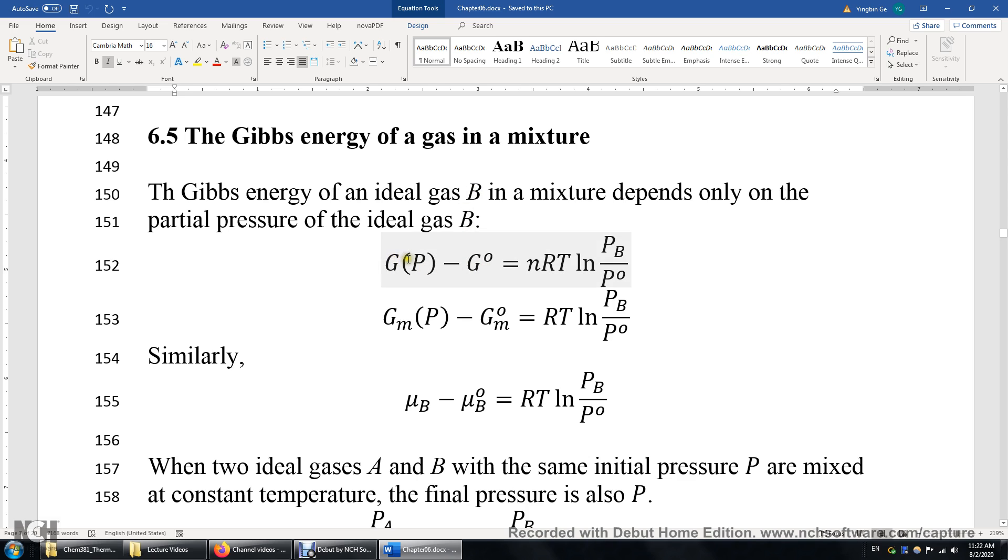The Gibbs energy of this B minus the standard Gibbs energy of B is simply nRT times the logarithm of the partial pressure of B over P0. Alright, so you need to focus on the partial pressure of B.